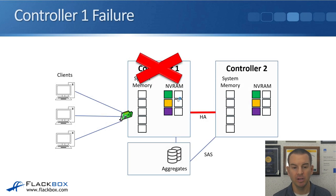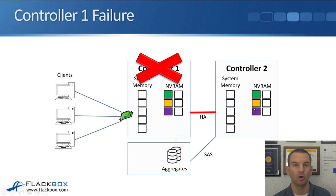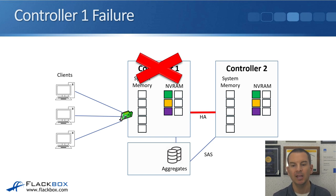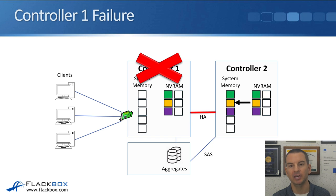Here we have a failure of Controller 1 — it's lost power, so everything in system memory is lost. But we've still got the data in NVRAM that hasn't been written to disk yet, on both Controller 1 and Controller 2. We don't want to wait for Controller 1 to come back up; we want the system operational immediately, with Controller 2 taking ownership of the disks. So Controller 2 takes ownership of Aggregate 1. The data in NVRAM gets written from NVRAM to system memory on Controller 2, and then sent down to disk in the next CP.